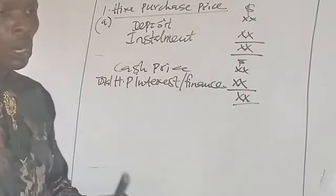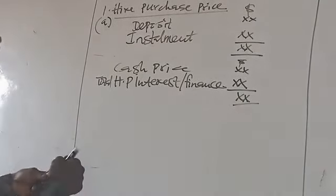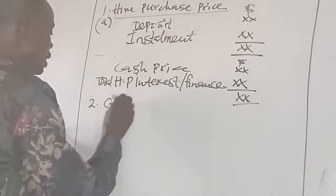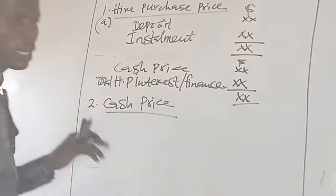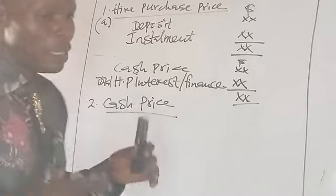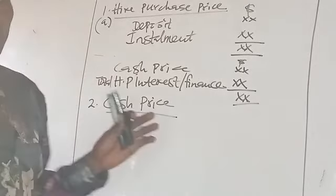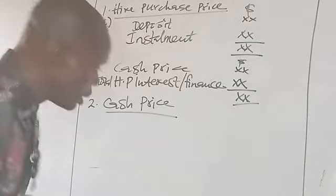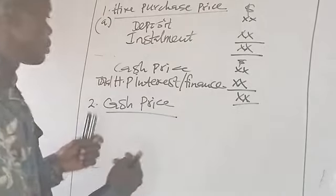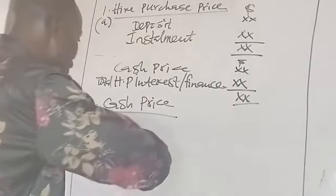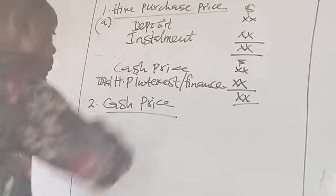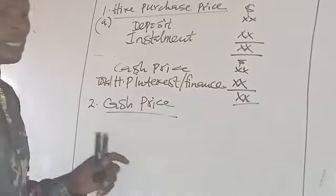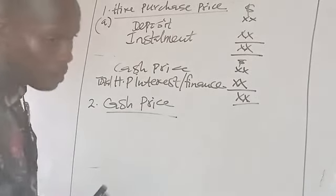These are the two ways in which the Hire Purchase Price may be calculated: one way is by adding the deposit and installments; another way is to add the Cash Price and the Hire Purchase Interest. The second term I am going to examine is the Cash Price. Cash Price is the normal selling price of the item.